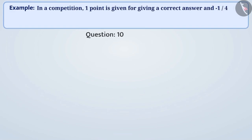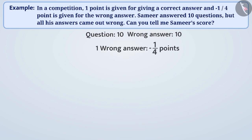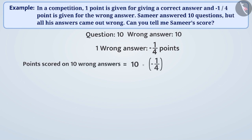Sameer answered 10 questions and all his answers were wrong. If a wrong answer is given a score of minus 1 by 4, then we have to multiply minus 1 by 4 into 10 to find the score. We multiply 10 by the numerator of minus 1 by 4 to get the numerator of the result as minus 10, and keep the denominator the same. That is, 10 into minus 1 by 4 is equal to minus 10 by 4.